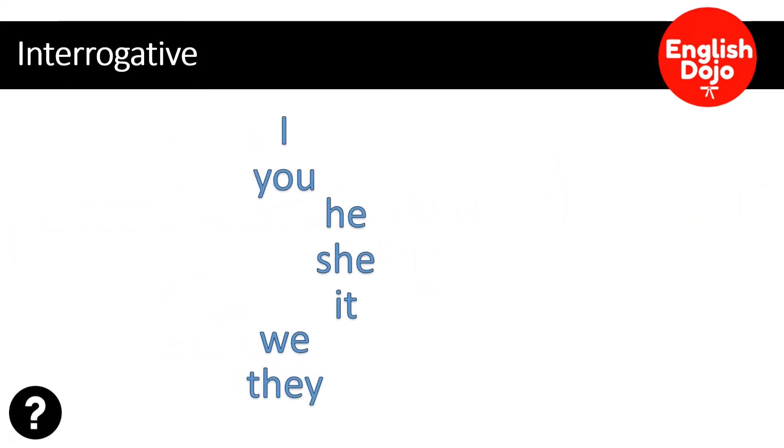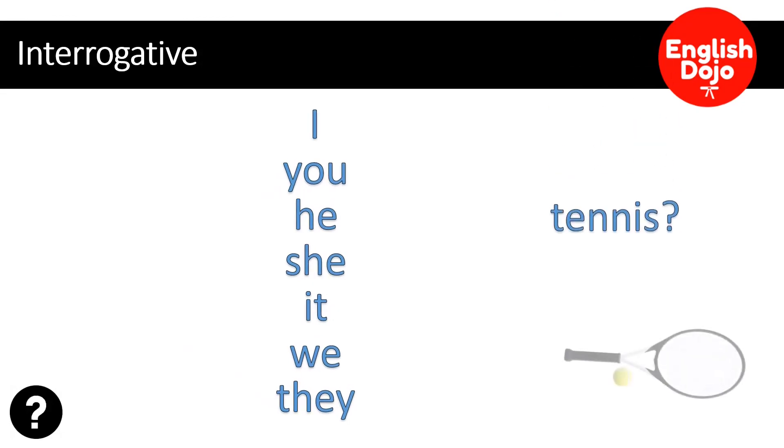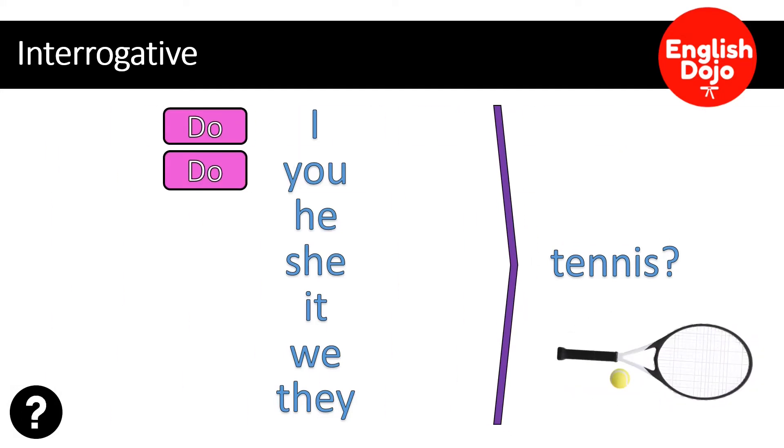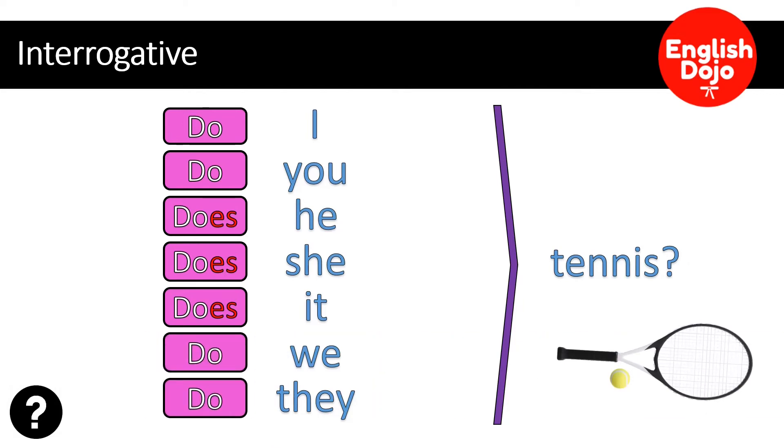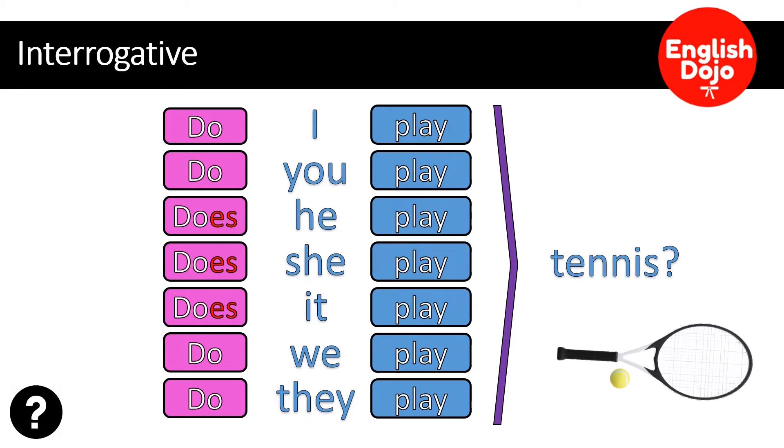Vamos a preguntar si juegas tennis. Comenzamos con los auxiliares. Do para I y para you, para he, she, it, does. Para we and they, do. El verbo se queda igual porque ya lo conjugamos, ya conjugamos el auxiliar. Do I play tennis? Do you play tennis? Does he play tennis? Does she play tennis? Does it play tennis? Do we play tennis? Do they play tennis?